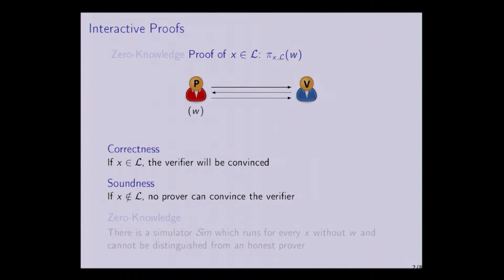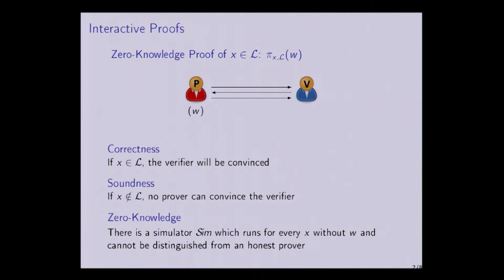You all know what a cryptographic proof is: a prover knowing some witness which allows to verify in polynomial time that some word x belongs to some NP language L, interacting with a verifier. At the end of the interactive protocol, the verifier should be convinced that x belongs to L. The two security properties we want are correctness and soundness. Additionally, in the case of zero-knowledge proof, we require that no information leaks on the witness held by the prover when interacting with the verifier, except that the statement is true. More formally, this is stated by requiring the existence of an efficient simulator, indistinguishable from an honest prover, but which runs without knowledge of the witness W.